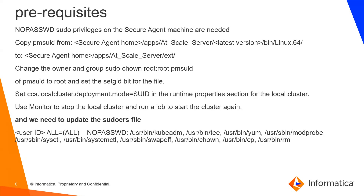If your secure agent services are started by a user which does not have sudo no-password privileges, you need to perform the following steps. Copy the pms_uid from the path secure-agent-home/apps/atscale-server/latest-version/bin/linux64 to the path secure-agent-home/apps/atscale-server/ext. Then change the owner and group using the command: sudo chown root:root pms_uid, and set the setUID bit of the file. Then mention this property in the advanced cluster configuration runtime: CCH_CIRCLE_CLUSTER_DEPLOYMENT_MODE=SUID.